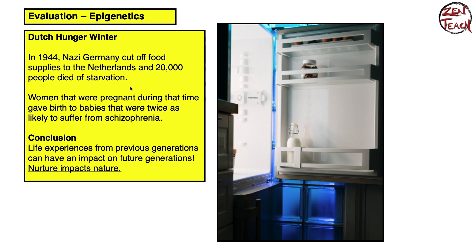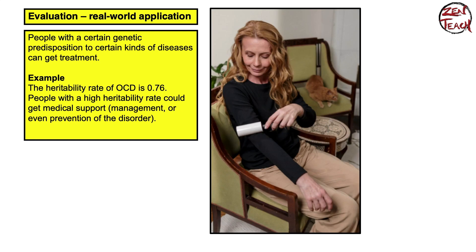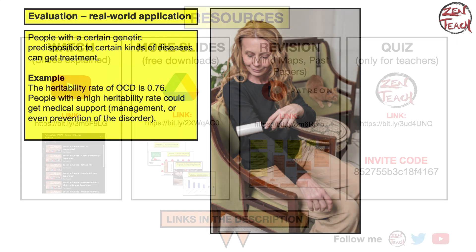Knowing how much nature and nurture contribute to a certain disease, like OCD, is very helpful. For example, if OCD has a heritability rate of 76% — meaning 76% of your OCD can be explained by the genes you carry — we could screen people for their genes and figure out if they are likely to develop OCD. If we know that early enough, we can manage or even prevent the disorder from ever happening. Having that breakdown allows us to effectively treat people early on.